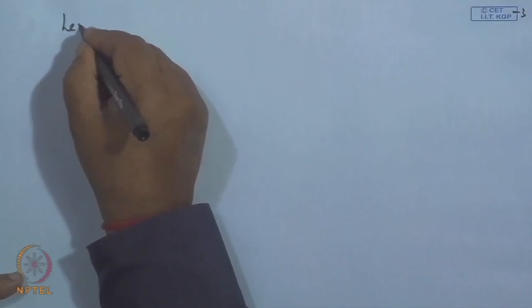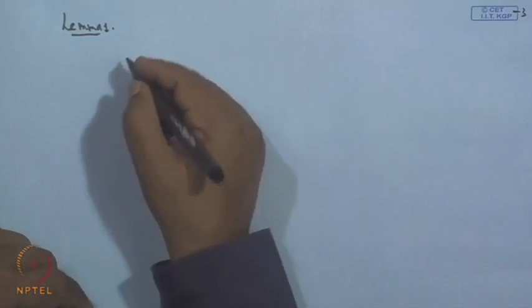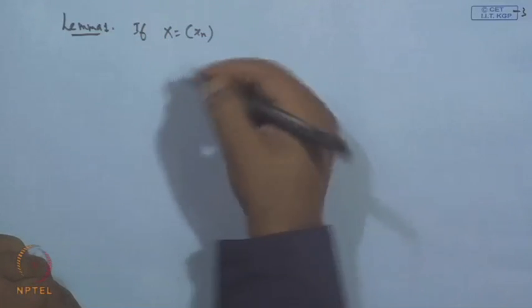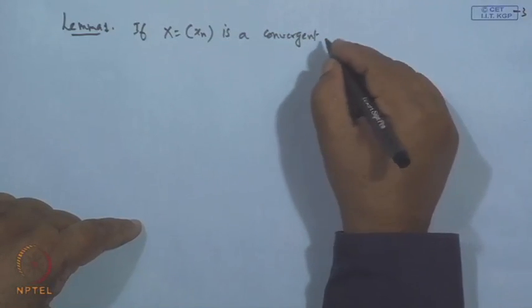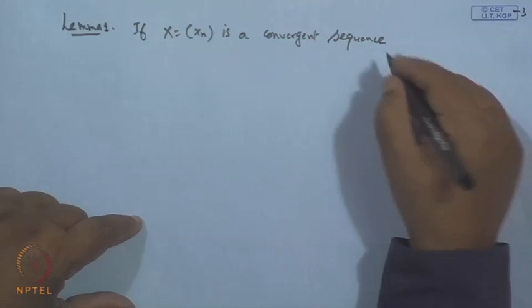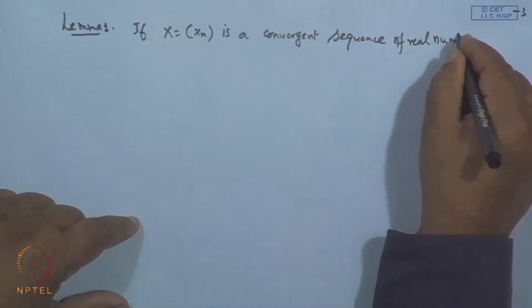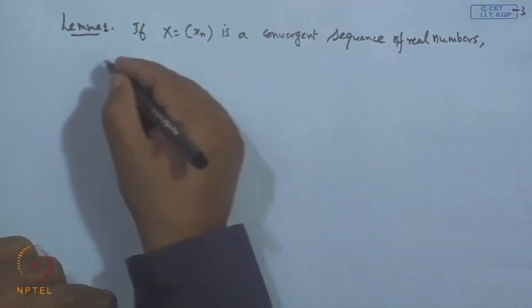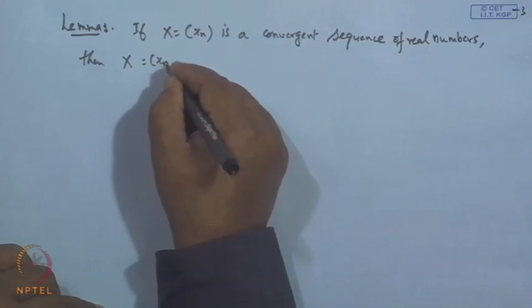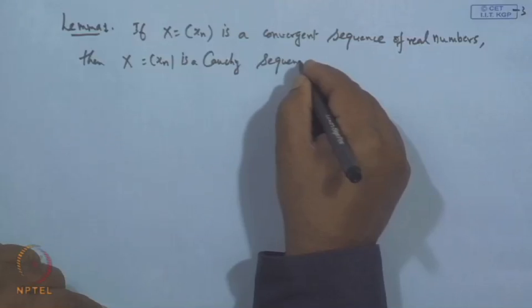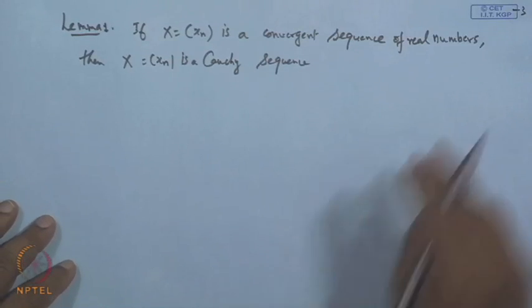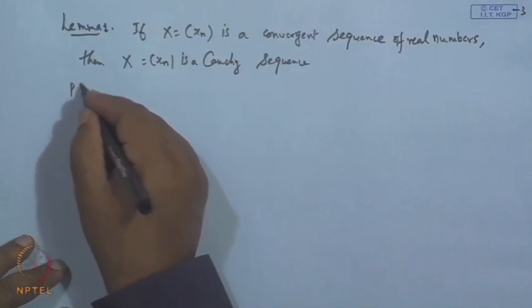Let us see the first lemma: if x = {x_n} is a convergent sequence of real numbers, then the sequence x is a Cauchy sequence. This is the first result — every convergent sequence is a Cauchy sequence. The proof is simple.